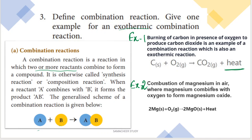Another example is the combustion of magnesium in air, where magnesium combines with oxygen to form magnesium oxide: 2Mg + O2 → 2MgO + heat. This is another exothermic combination reaction.